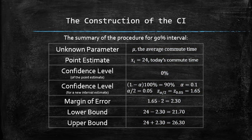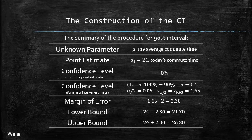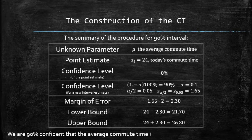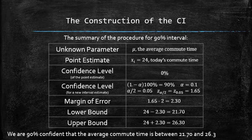The following statement is the interpretation of the results. We are 90% confident that the average commute time is between 20.7 and 27.3 minutes.